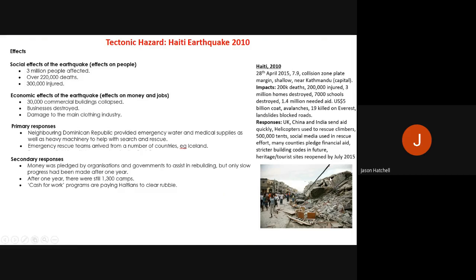Secondary responses — longer-term actions over months and years — included money pledged by organisations and governments for rebuilding. However, slow progress was made: after one year there were still 1,300 temporary camps for displaced people. Cash-for-work programmes were also set up, paying Haitian people to clear the rubble, which has since been cleared. Remember to use at least two impacts and two responses in your exam answer.